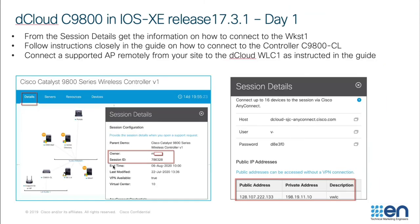Going back to the scheduled session in dCloud, if you click on the 'Details' tab, you will be presented with the session details. This gives you information on how to actually log in to the wireless controller set up in dCloud. You'll be given the owner name and session ID — the owner will be your login name and the session ID will be your password. Once you use these credentials, you'll be able to log in to the wireless controller. Scrolling down, you'll be given information such as the public IP address of the controller — in our case, 128.107.222.133 — and the private address, 198.19.11.10.